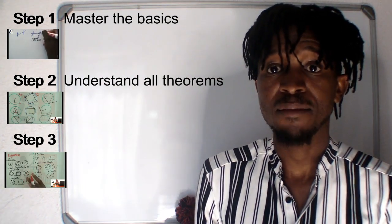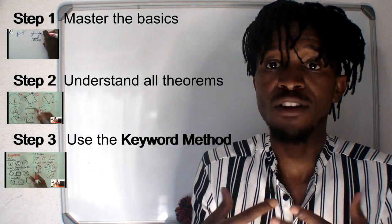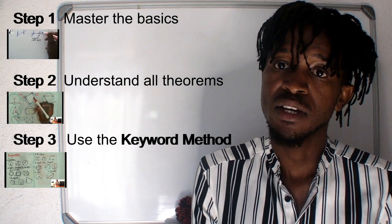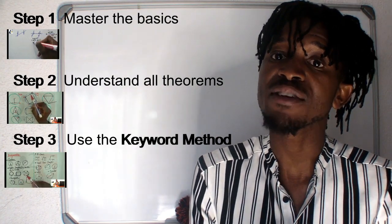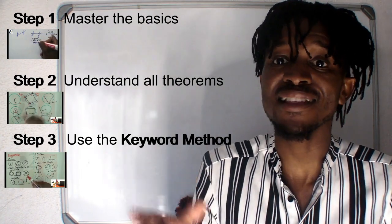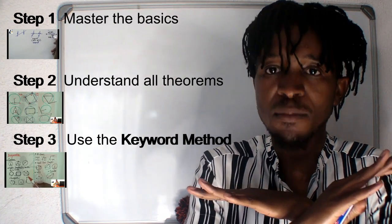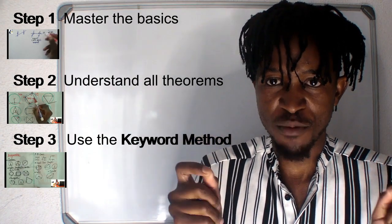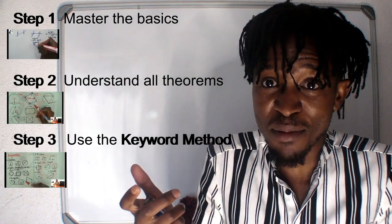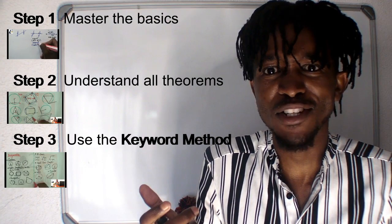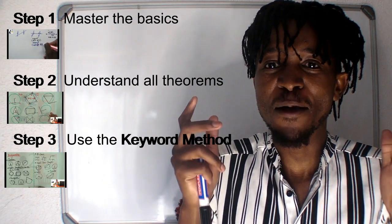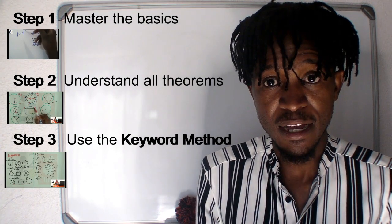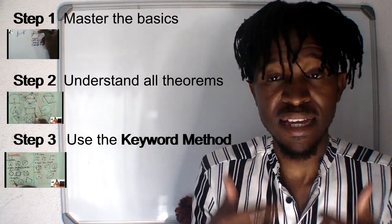Then step number three is the APA — a method I developed over the years to help students navigate geometry exam questions more easily than before. It's the best method to approach your geometry questions. It's a keyword approach — a keyword method I created.